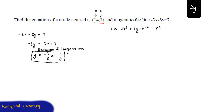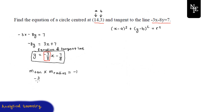As we saw in the diagram, the radius and the tangent line are perpendicular to each other, so the gradient of our radius times the gradient of the tangent must equal -1 — that's a property of perpendicular lines. The gradient of the tangent line is -3/8, so -3/8 times the gradient of the radius equals -1, which means the gradient of the radius is 8/3.